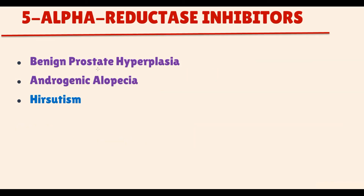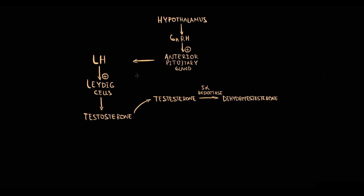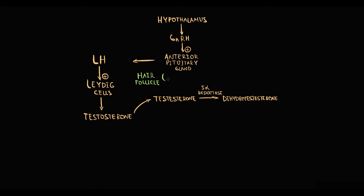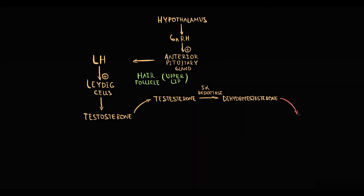The FDA currently has two approved indications for 5-alpha reductase inhibitors: benign prostatic hyperplasia and androgenic alopecia. Another prospective option is using 5-alpha reductase inhibitors in the management of hirsutism. As mentioned, dihydrotestosterone is responsible for male hair pattern. For example, in the upper lip area, when testosterone enters the hair follicle, 5-alpha reductase converts it to dihydrotestosterone.